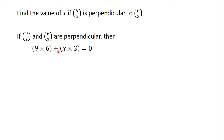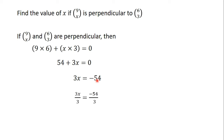So 9 times 6 plus x times 3. 9 times 6 is 54. x times 3 from algebra is 3x. So we have 54 plus 3x equals 0. We have to make x the subject, so we send 54 over to this side: 3x equals minus 54. From linear equations, we divide both sides by 3, and x is given as minus 18. So if these two vectors are perpendicular, then x is equal to minus 18.